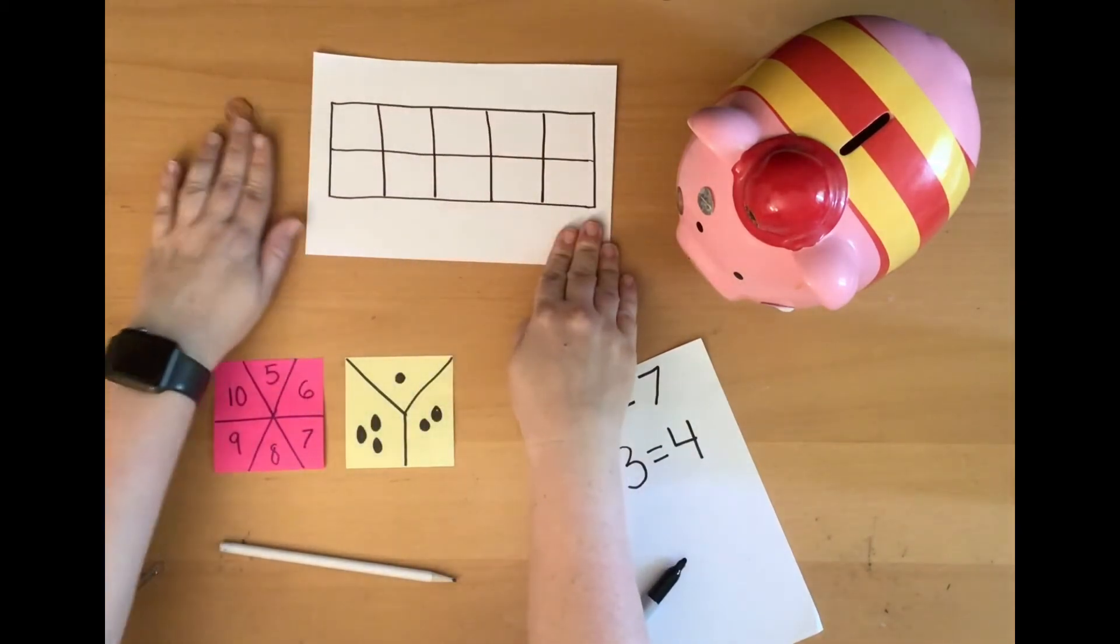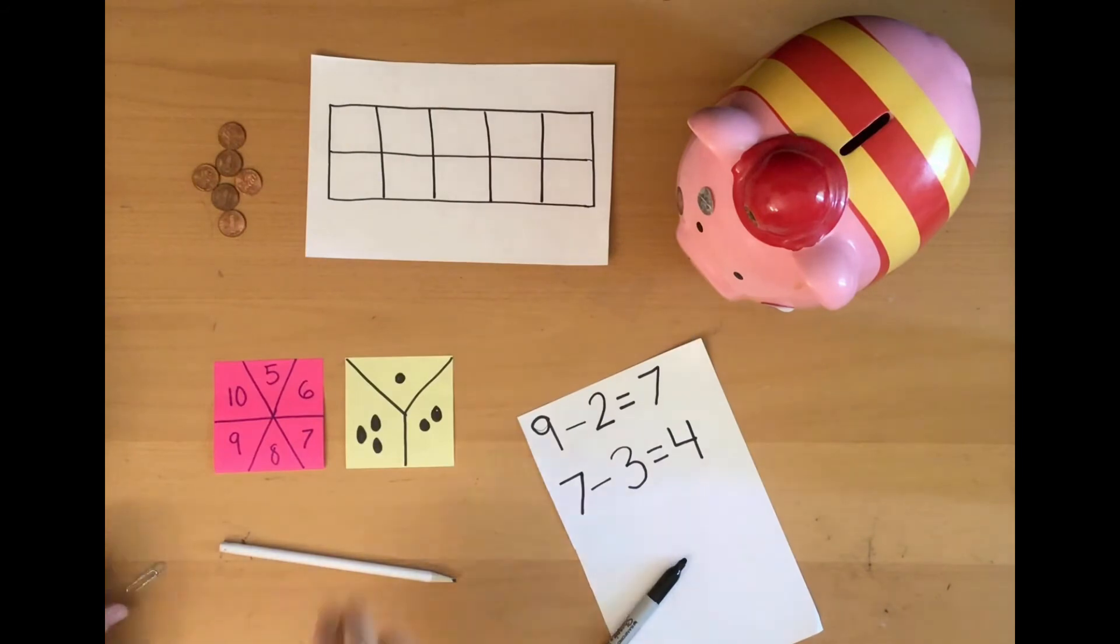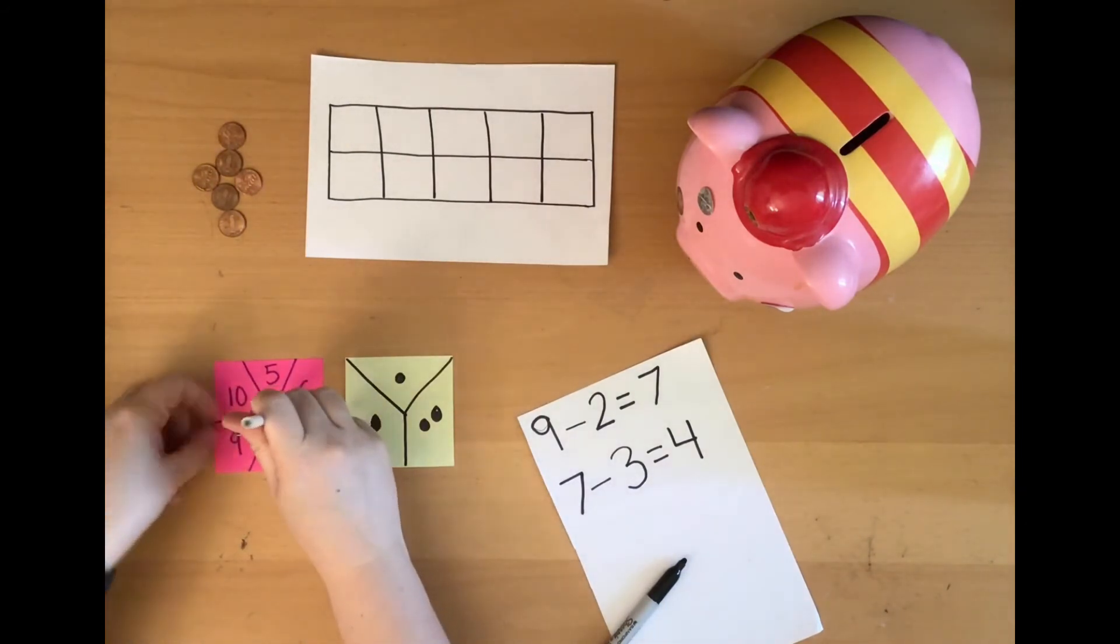All right. Let's do one more together and then you can play at home. Start with my numbers. Oh, that lands on the line. I'm going to go again. 8.